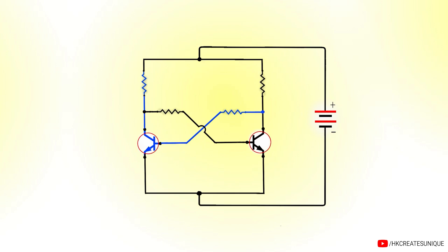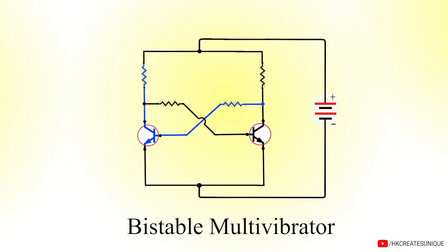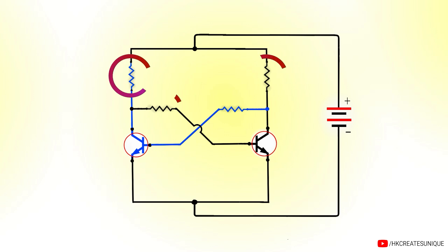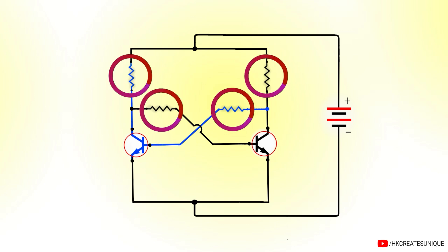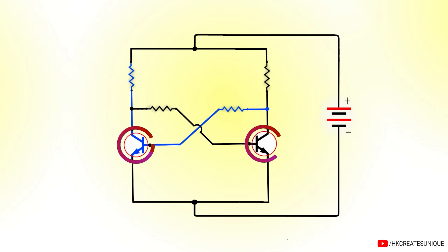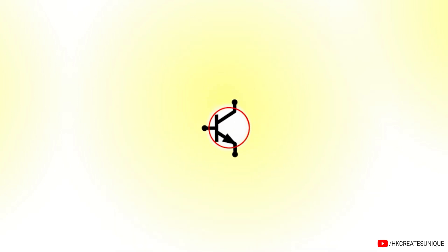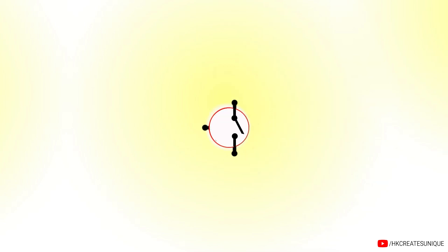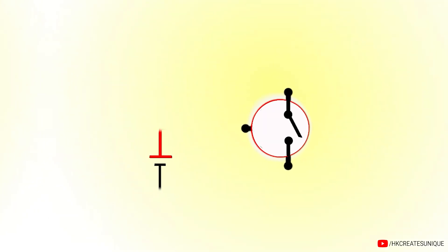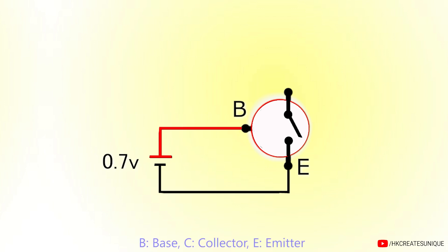This is the circuit diagram of a bistable multivibrator. The circuit consists of four resistors and two transistors. The transistor is used as a switch in the multivibrator. When a voltage of around 0.7 volts is applied between the base and emitter of the transistor, it acts as a closed switch between collector and emitter.